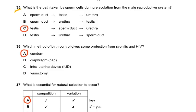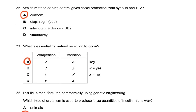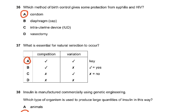Question 35: what is the path taken by a sperm cell during ejaculation? The path is testes, sperm duct, urethra. This is very basic — revise it if you are not clear. Question 36: which method of birth control gives some protection from syphilis and HIV? The use of condoms gives some protection from both syphilis and HIV.